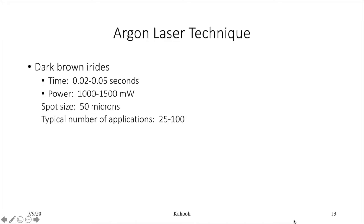For dark brown irides with argon/diode laser: 0.02 to 0.05 seconds, 1,000 to 1,500 milliwatts, 50 micron spot size, and typically more spots — 25 to 100.